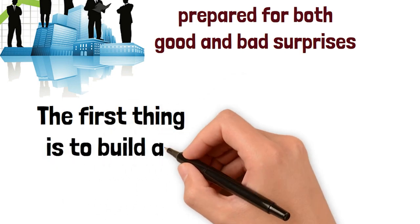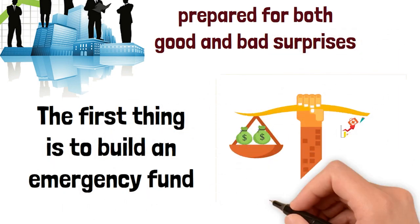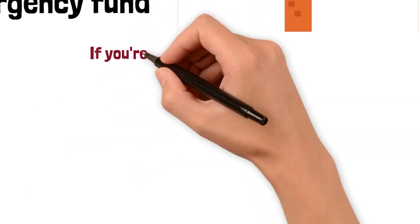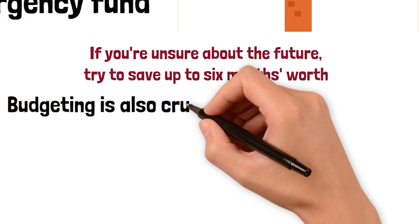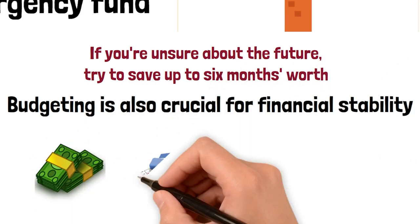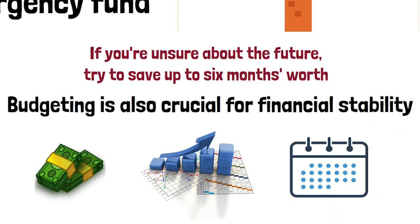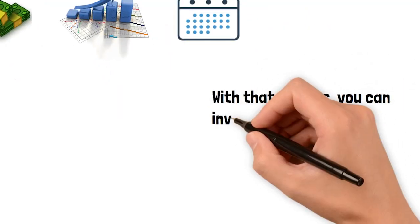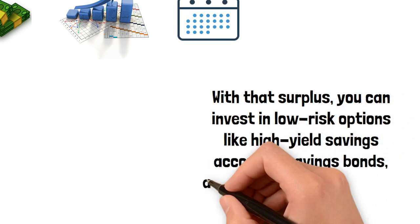The first thing is to build an emergency fund. Save up at least three months' worth of living expenses and keep it in a high-interest account. If you're unsure about the future, try to save up to six months' worth. Budgeting is also crucial for financial stability. When you control your money by living below your means, you'll have extra money left over each month. With that surplus, you can invest in low-risk options, like high-yield savings accounts, savings bonds, and money market accounts.